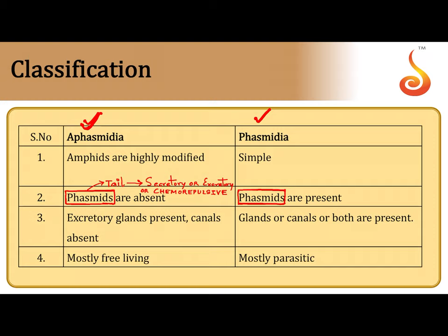What is common to both Aphasmidia and Phasmidia is that they both have another structure near the mouth, in the anterior region of the body. Phasmids are located near the tail or anus, whereas Amphids are located at the anterior end of the body, close to the mouth. Scientists are quite sure that these Amphidial glands are chemoreceptors — they are chemosensory in nature.